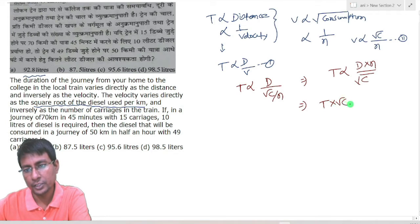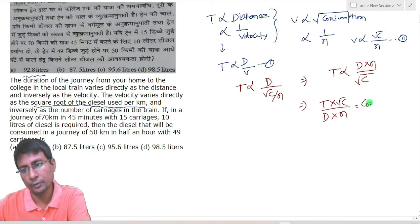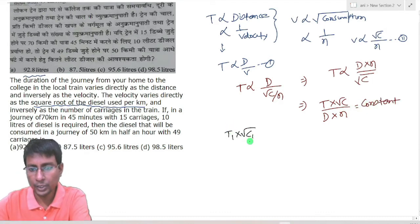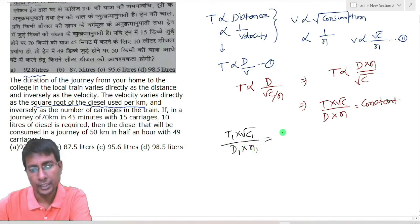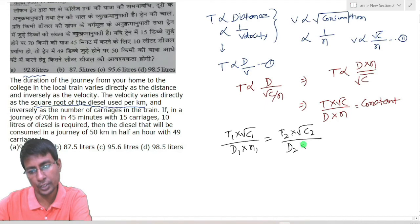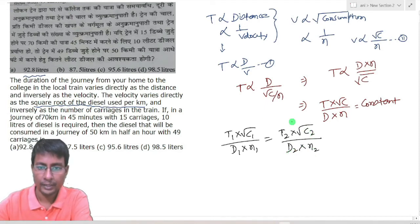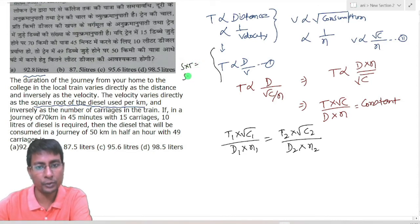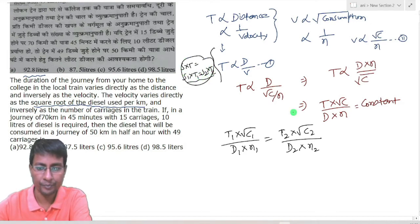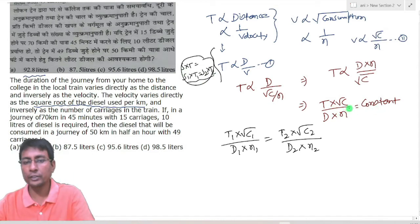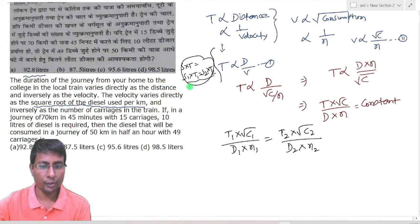Using mathematics, we can write: T into root under consumption divided by distance into number of carriages equals a constant value. This means T1 into root under consumption 1 divided by distance 1 into number of carriages 1 equals T2 into root under consumption 2 divided by distance 2 into number of carriages 2. This is the same concept as S1 into T1 equals S2 into T2 when the product is constant.